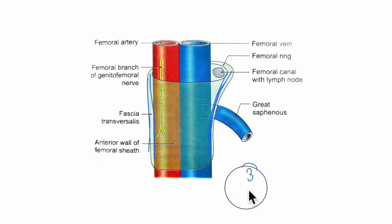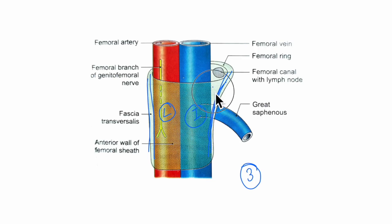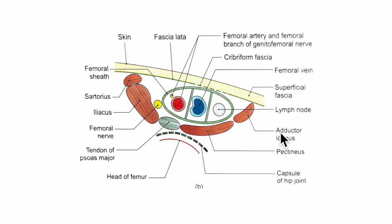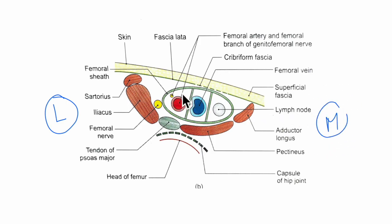The femoral sheath is divided into three compartments by septa. The first is the lateral or arterial compartment, the second is the intermediate or venous compartment, and the third is the medial or lymphatic compartment. In the lateral compartment we can see the femoral artery and the femoral branch of the genitofemoral nerve. The intermediate compartment contains the femoral vein. The medial compartment contains the lymph node — it is the smallest and is called the femoral canal.